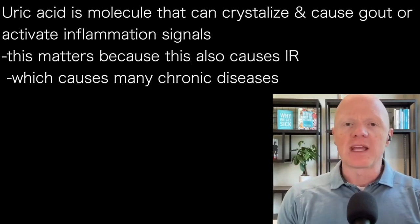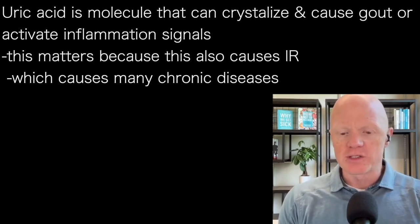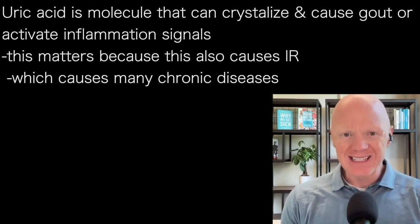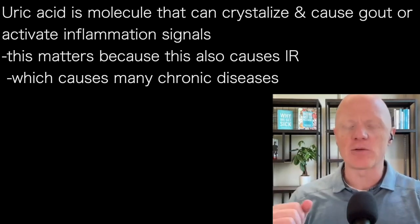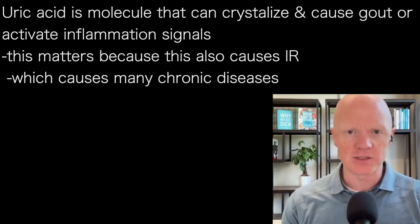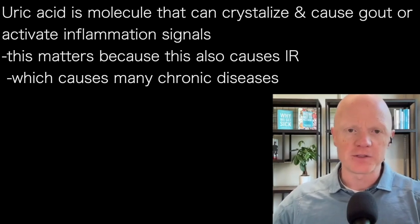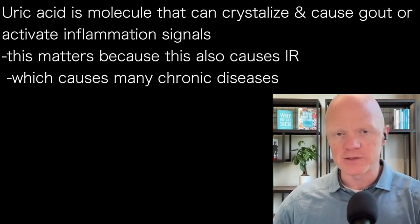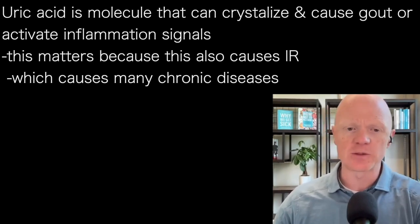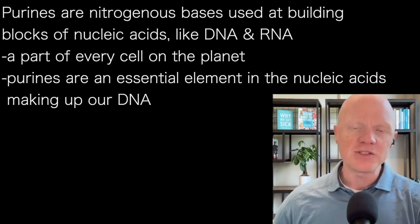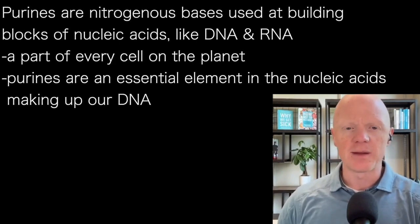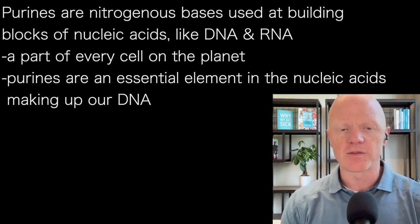Where does uric acid come from? At this point, you understand generally what uric acid is — this molecule in the blood that has the potential to both crystallize together, causing gout, or just activate inflammation signals. You have a better understanding of why that matters in the context of insulin resistance. Now let's move on to discussing where uric acid comes from — I mentioned early on that the origins come from the purines.